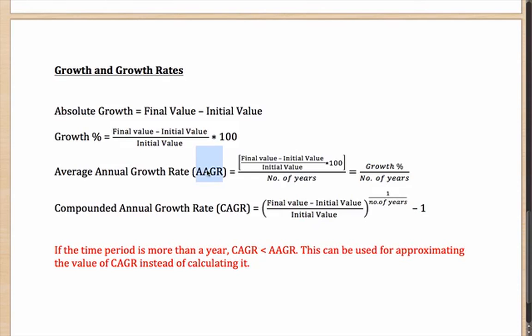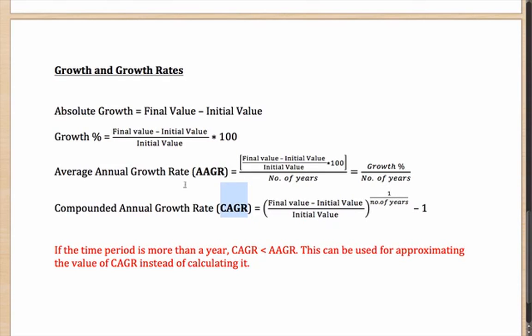Now I come to the two important concepts of AAGR or CAGR. Actually the average annual growth rate is very similar to simple interest. If you had earned interest of 50 rupees in 10 years, then what was your average return? Well, 5 rupees, which is what is happening here. Whatever was your growth percentage divided by the number of years, you will get simply your average annual growth rate.